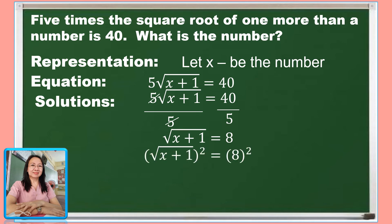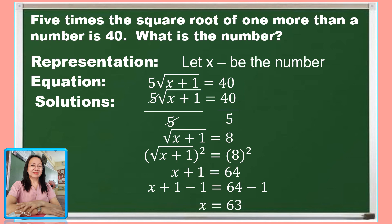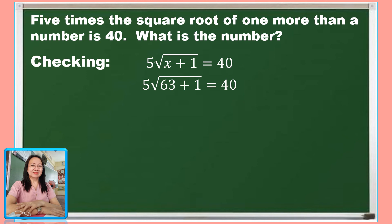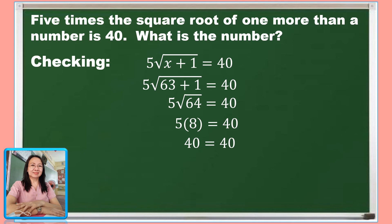Now, to eliminate the square root sign, let us square both sides. The square of the square root of x plus 1 is x plus 1, and 8 squared is 64. To eliminate 1 on the left side, add both sides by negative 1, so x equals 63. For the checking, using the original equation 5 times the square root of x plus 1 equals 40, substitute 63 for x: 63 plus 1 equals 64, and the square root of 64 is 8, multiplied by 5 gives 40. And 40 equals 40 — a true statement. The number is 63.